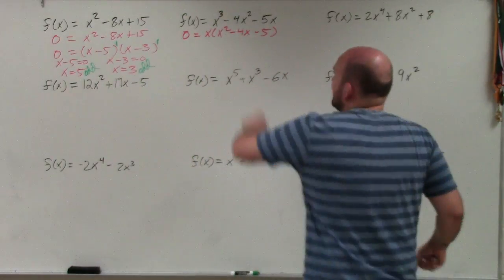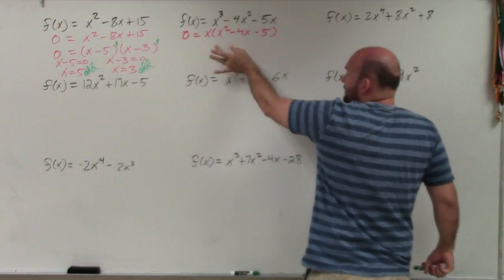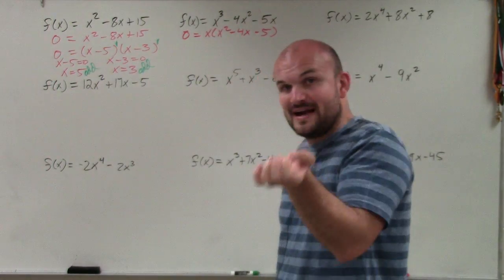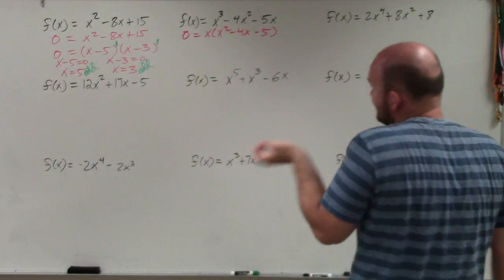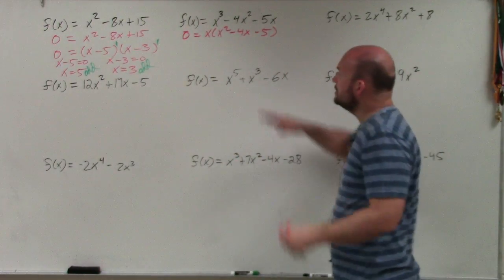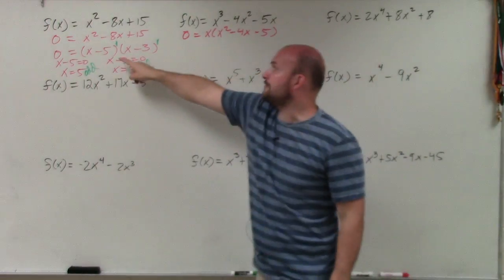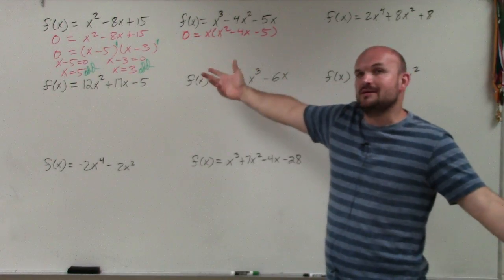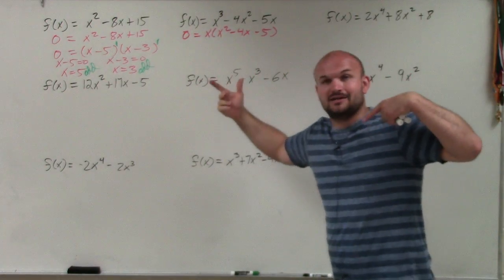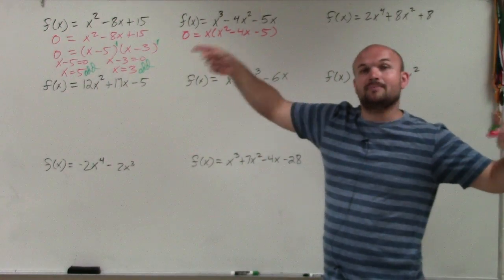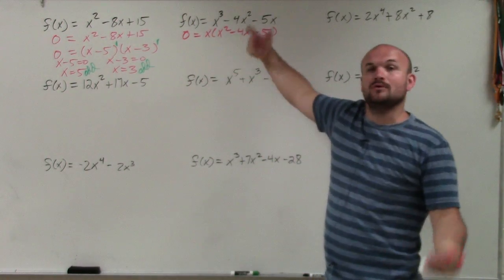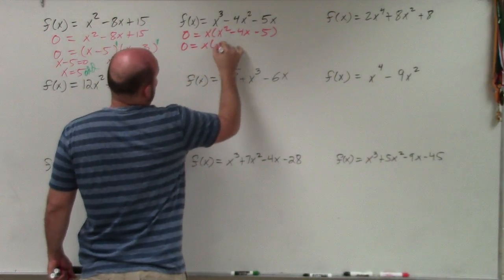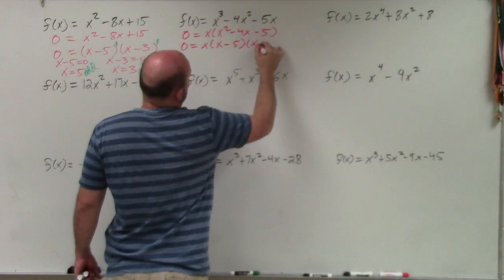After factoring out the x, I'm left with x squared minus 4x minus 5. Now, can I further factor this? It's not yet in its linear factored form, so I go back and do the same process. What two numbers multiply to give me negative 5 and add to give me negative 4? There are only two integer pairs: negative 5 and positive 1, or negative 1 and positive 5. They have to add to negative 4, which means negative 5 and positive 1. So I rewrite this as x times x minus 5 times x plus 1.